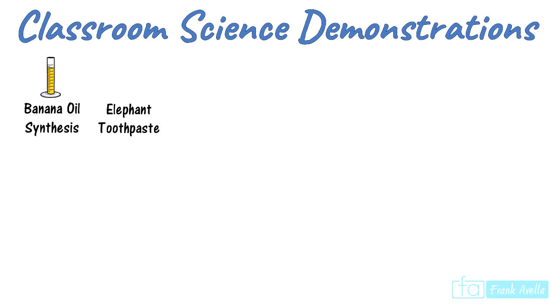As a high school teacher, elephant toothpaste is probably my most memorable demonstration. You take half a cup of hydrogen peroxide, a quarter cup of dish soap, yeast, and some food coloring. Then watch this beautiful reaction take place.